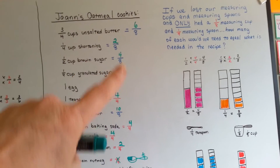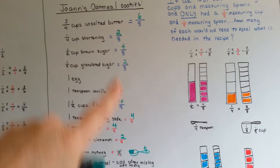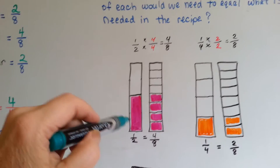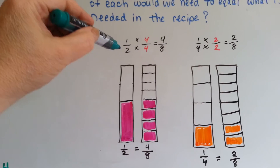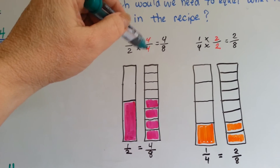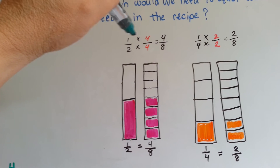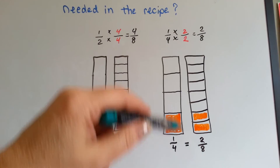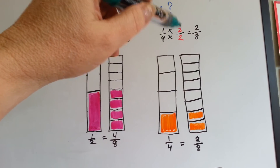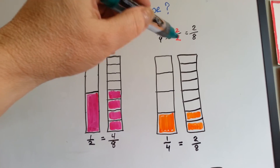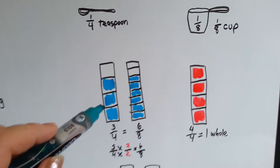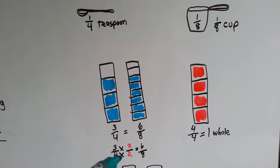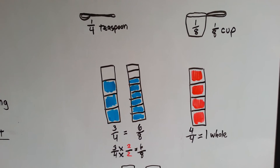Now you can see how fractions can be similar and equivalent to other fractions. Let's review what we did. One-half is equal to four-eighths — we had one-half and multiplied both the numerator and denominator by four: one times four is four, two times four is eight, giving four-eighths. One-fourth equals two-eighths because we multiplied the top and bottom by two: one times two is two, four times two is eight. Three-fourths equals six-eighths because we multiplied the numerator and denominator by two: three times two is six, four times two is eight.